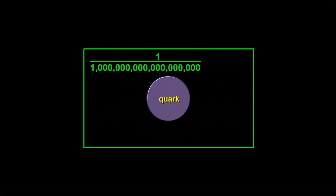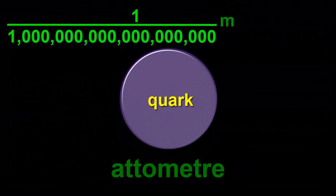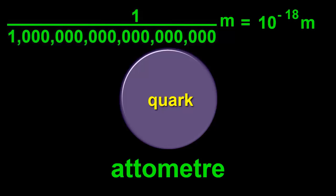Anything smaller than a proton or a neutron? You bet. Quarks are a quintillionth of a metre with 18 zeros on the bottom. Also called an attometre. 10 to the negative 18.